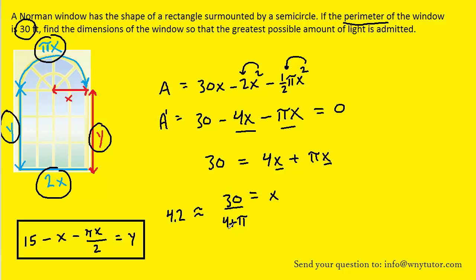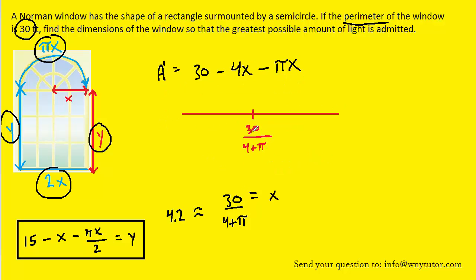To confirm that this value of x actually maximizes the area of the window we have to use the first derivative test. So let's do that next. We've plotted the x value right here in the middle of a number line. All we need to do is choose a value of x that's less than that number. So we could perhaps just choose 4 and then choose a value that's a little bit larger, maybe 5. We'll plug them into the first derivative which we've recopied right here.